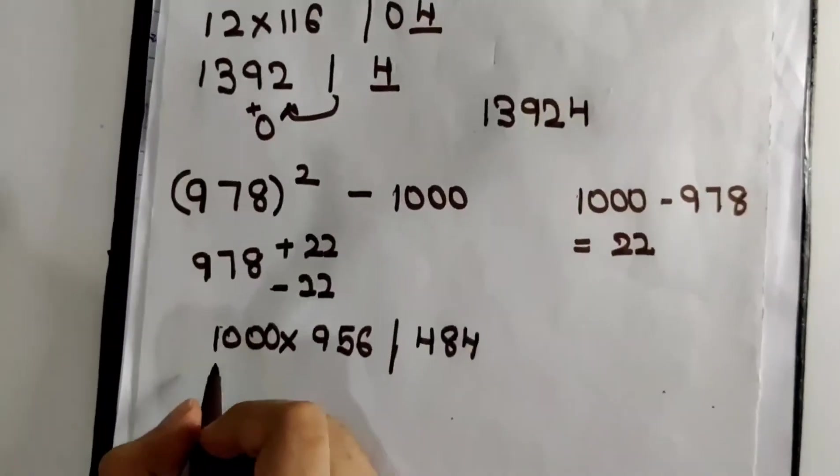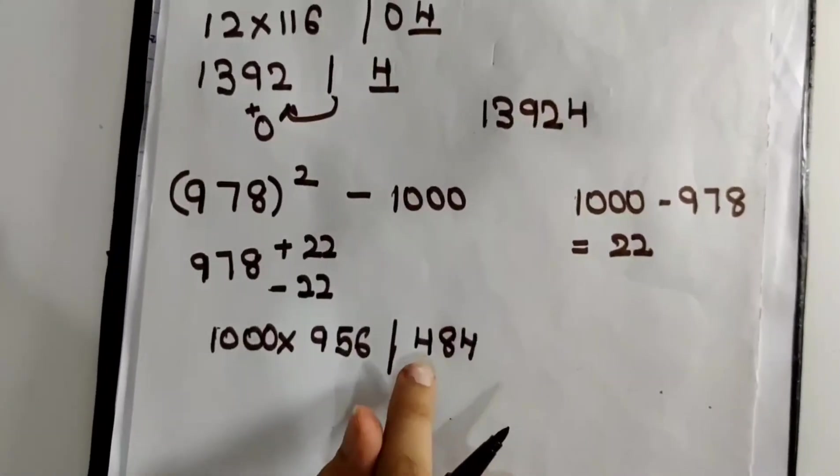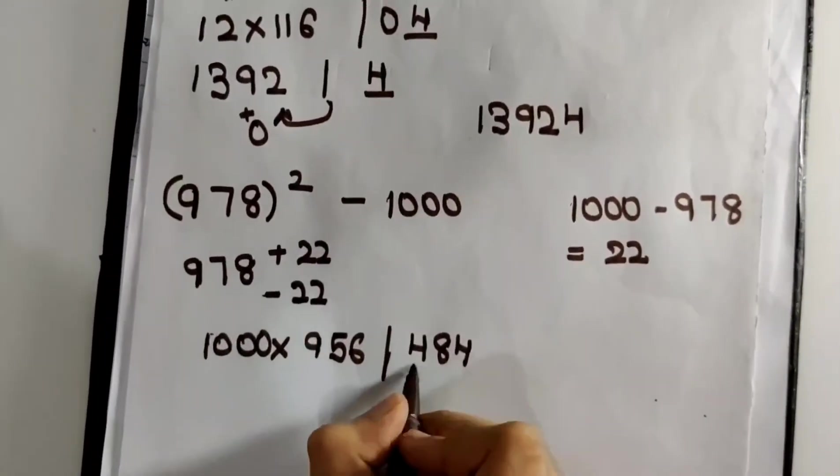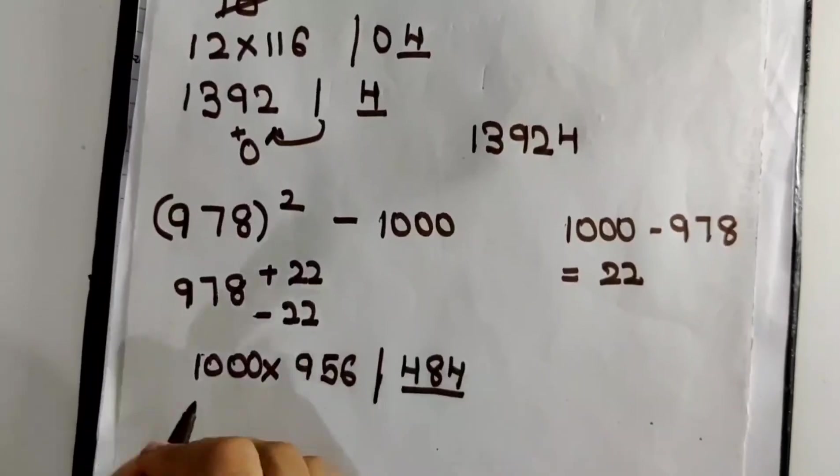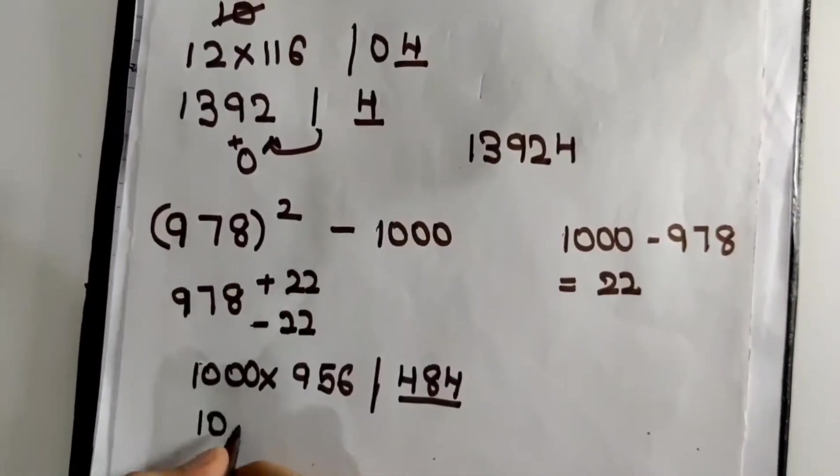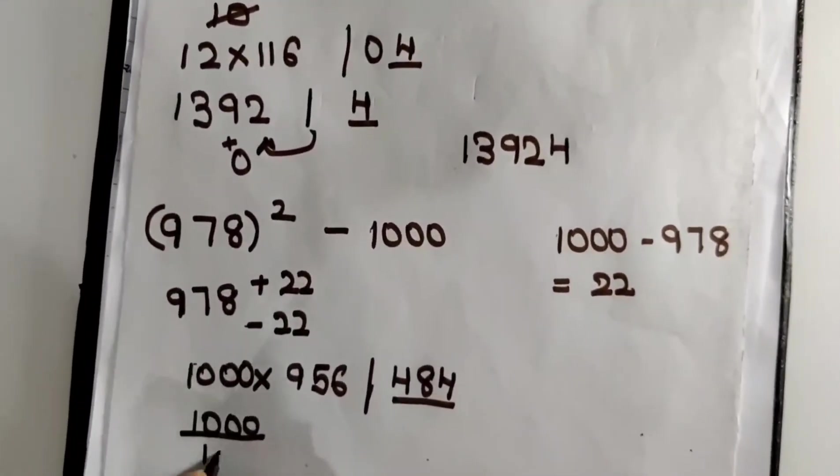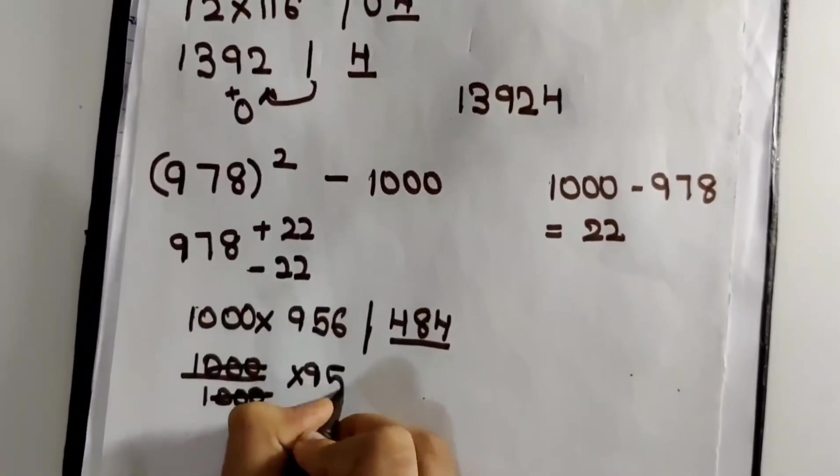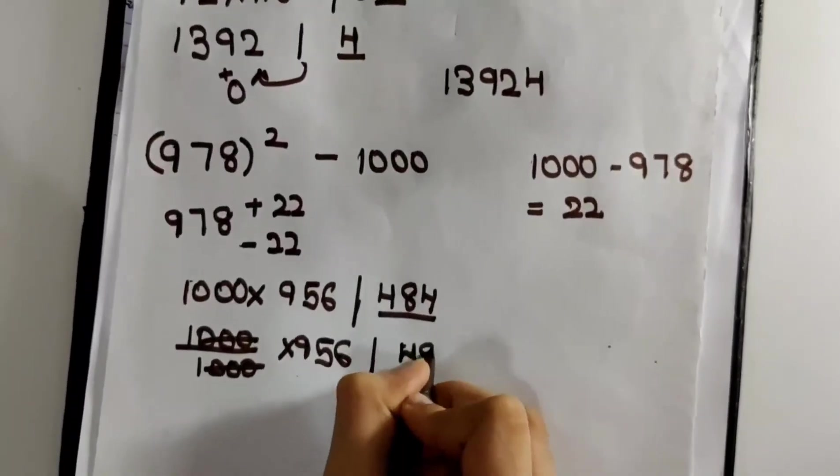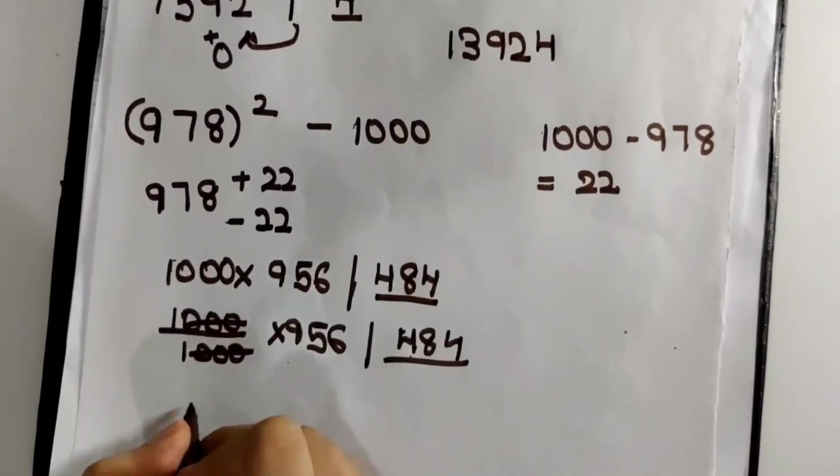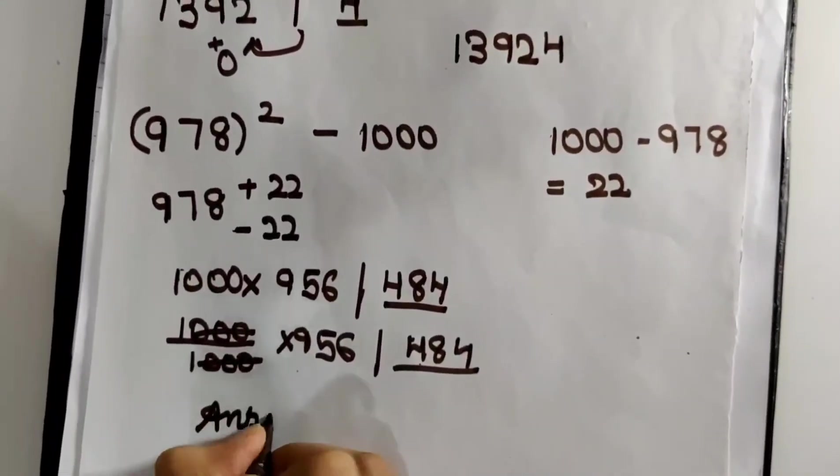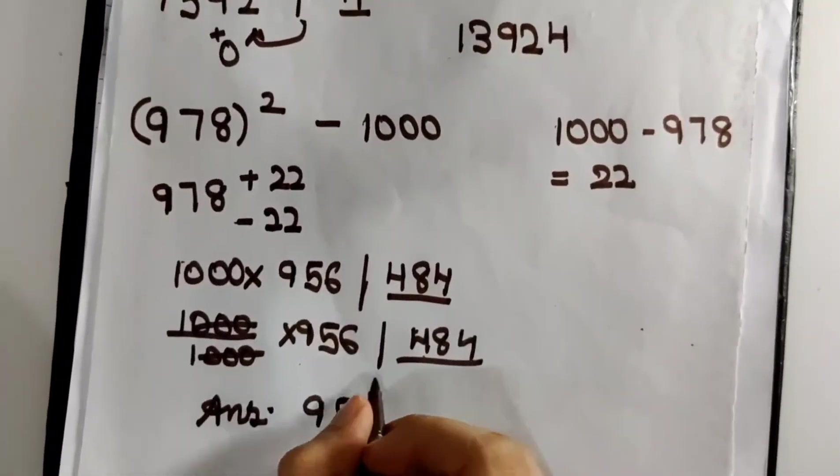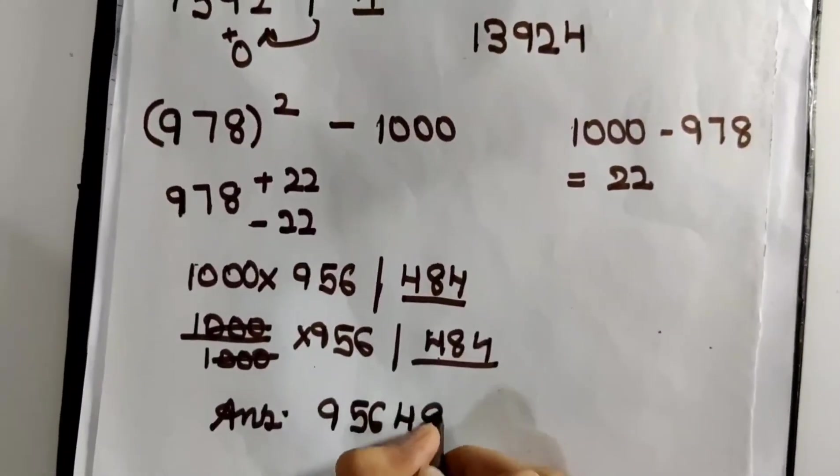Now, since there are three digits in the right hand side and since there are three zeros to be cancelled, this means all of the digits can be blocked here. That makes my task much easier. I will just cancel these zeros into 956. That is 484. My answer becomes simple. The required answer is 956 and 484. All of the digits are blocked, so I will write that directly.